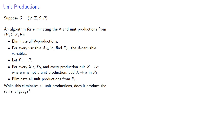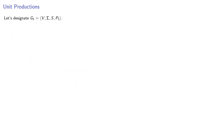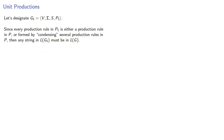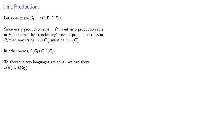While this eliminates all unit productions, does it produce the same language? Well, let's prove it. Let's designate our new language G1. Since every production rule in P1 is either a production rule in P or formed by condensing several production rules in P, then any string in the language of G1 must be in L. In other words, the language of G1 is a subset of our original language. So to show the two languages are equal, we can show that our original language is a subset of our new language.